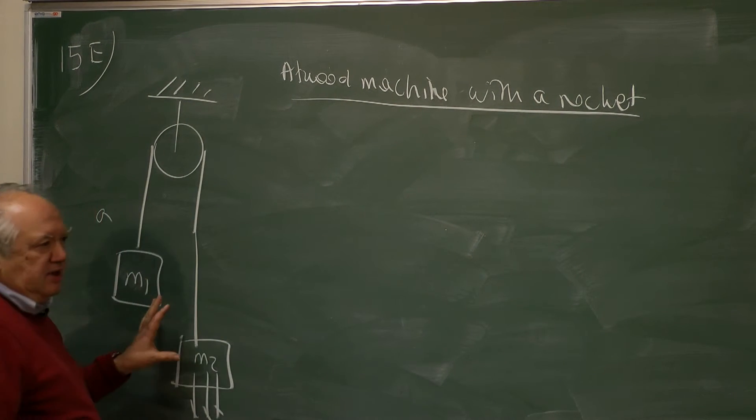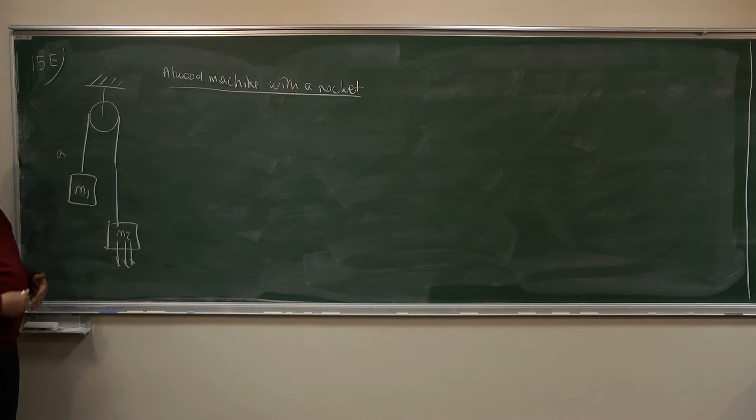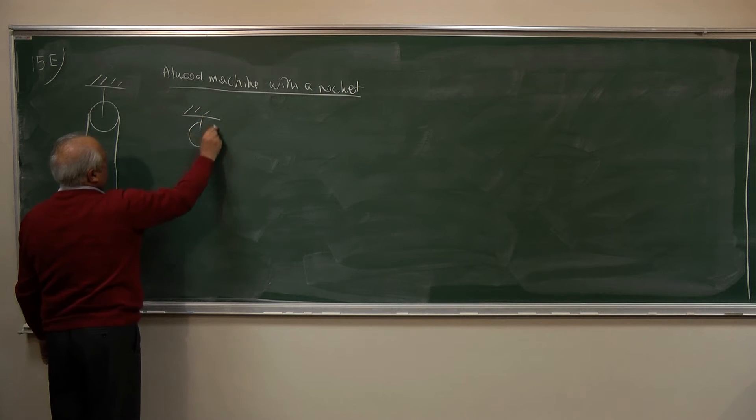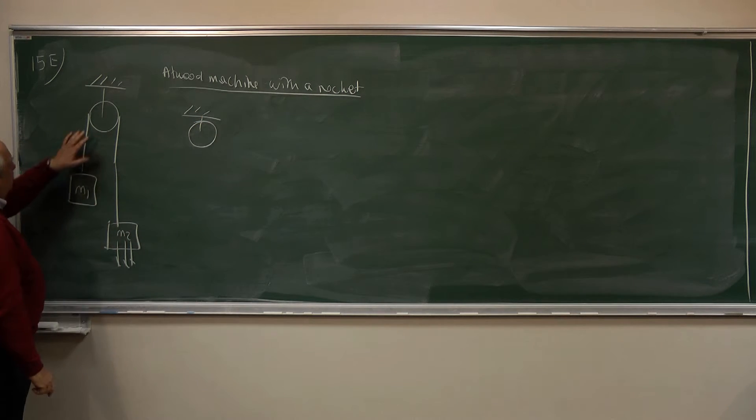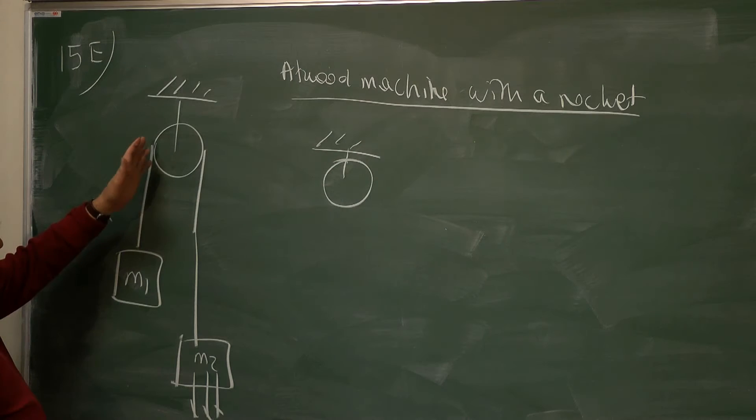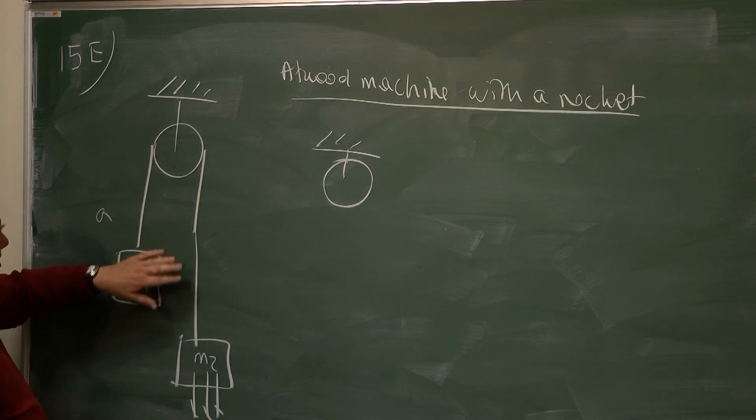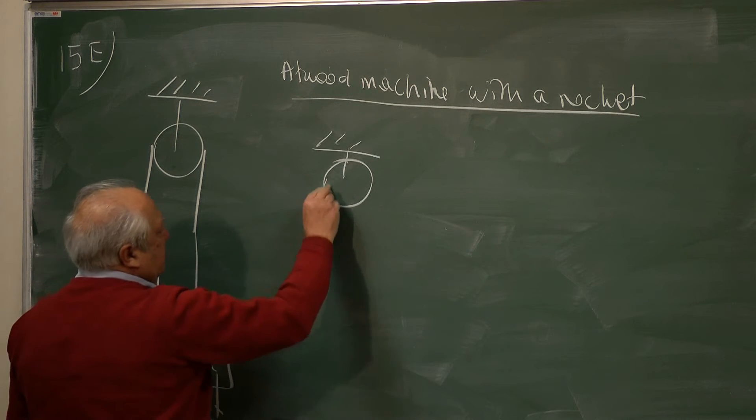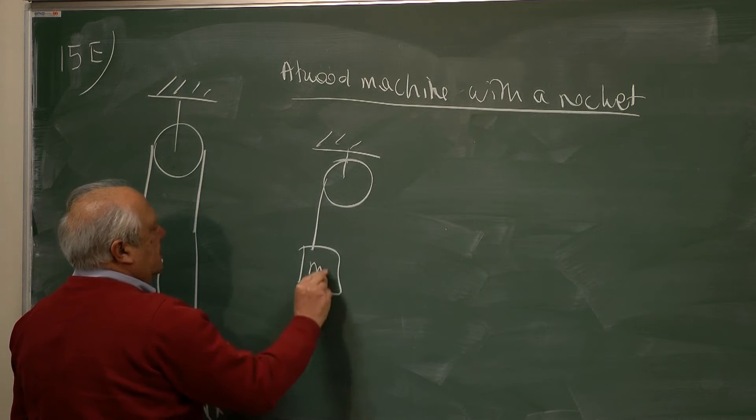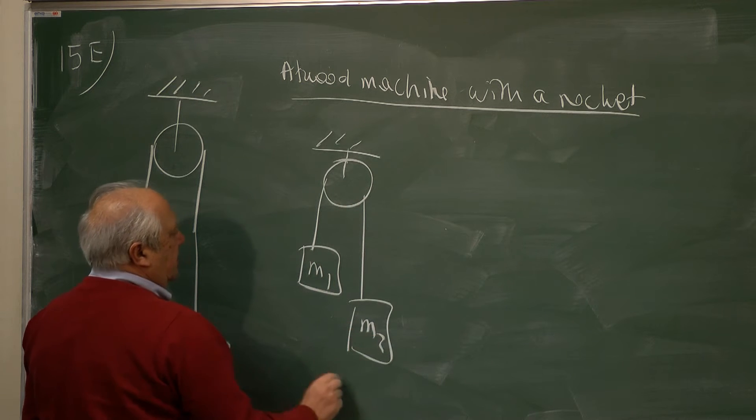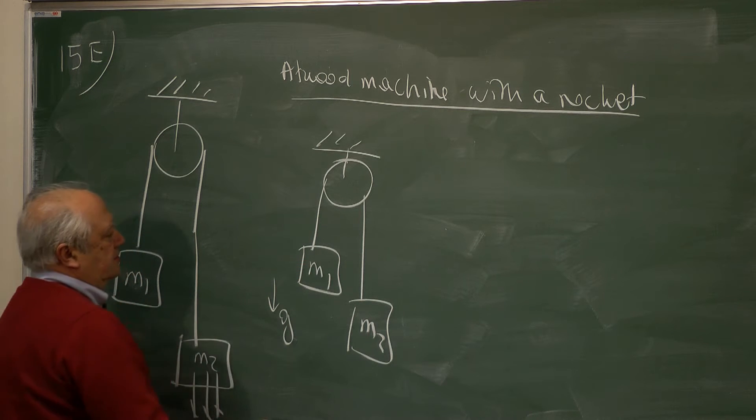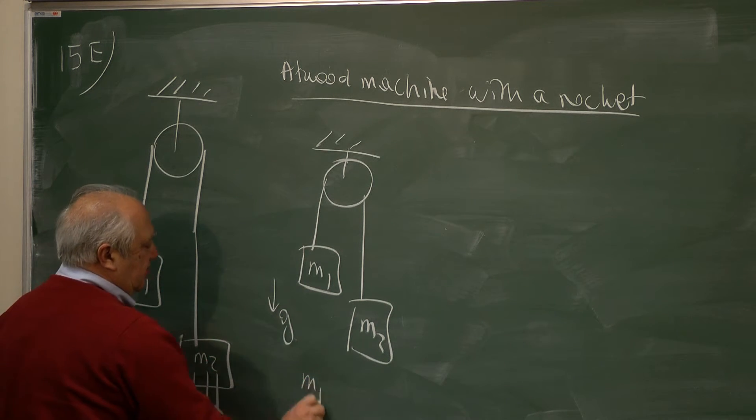Before I solve this problem, let's warm up to it by simple examples. Of course we assume the pulley has no mass, no inertia. And we neglect the mass of the ropes. So this is the ordinary Atwood. And what's the acceleration of this system? Suppose M1 is larger than M2.